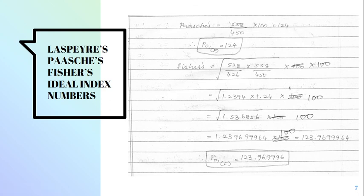Now Fischer's index number is just a combination of both Laspier's and Paasche's. So it is root of 528 by 426 into 558 by 456 into 100. So root of 1.239 into 1.24 into 100, root of 1.5368 which comes to 1.2396 into 100. So your Fischer's index number values to 123.9699.